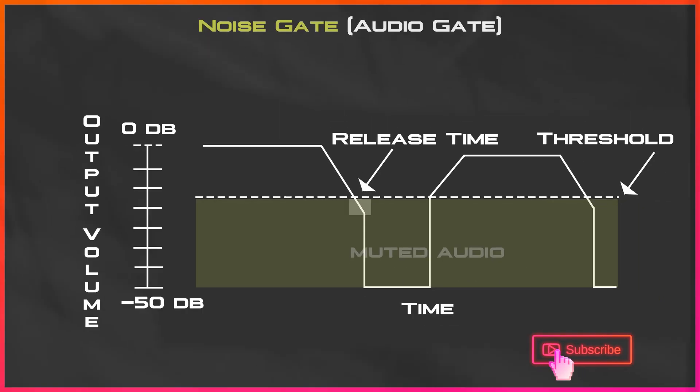Let me try explaining with a different, simpler graph. On the left, it says output volume, and on the bottom, it says time. As you speak into that microphone, it might get really loud at some points and really low at others. The low points are going to be muted in the highlighted areas, and the audio that will be heard on the output is the non-highlighted portion.